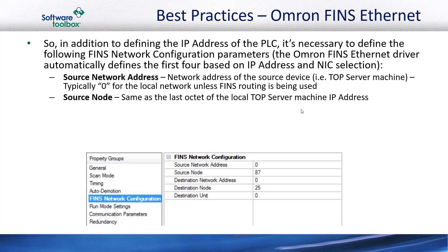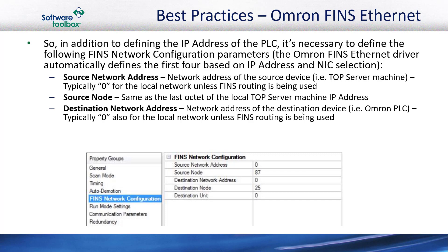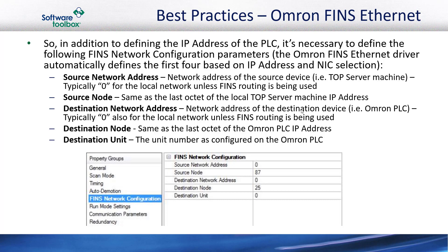The source node will be the last octet of the IP address assigned to the NIC on the TopServer machine. Then we have the destination network address — that's the network address of the destination device, i.e. the Omron PLC. Again, typically zero is used for the local network for this parameter unless FINS routing is being used. The destination node is the same as the last octet of the Omron PLC's IP address. Then we have the destination unit, and that's the unit number as configured on the Omron PLC — which, depending on the model, could be configured either in CX Programmer software or via rotary switches on the physical Omron PLC.